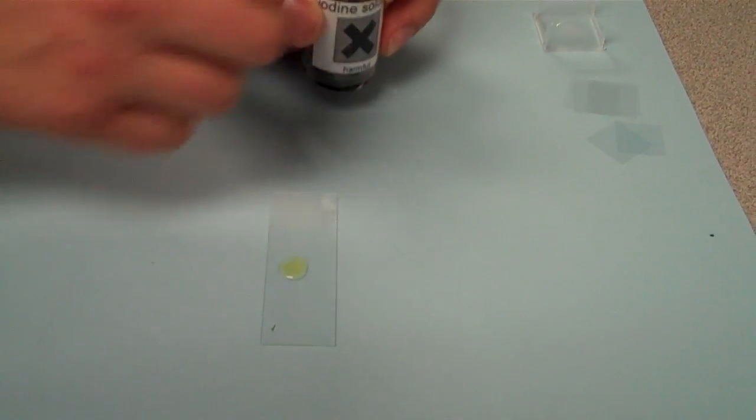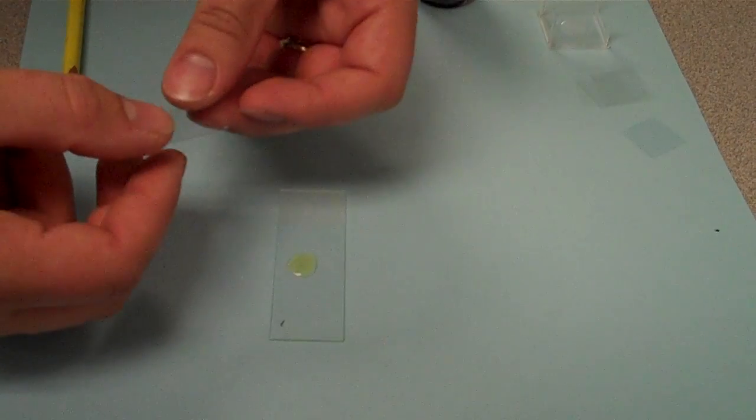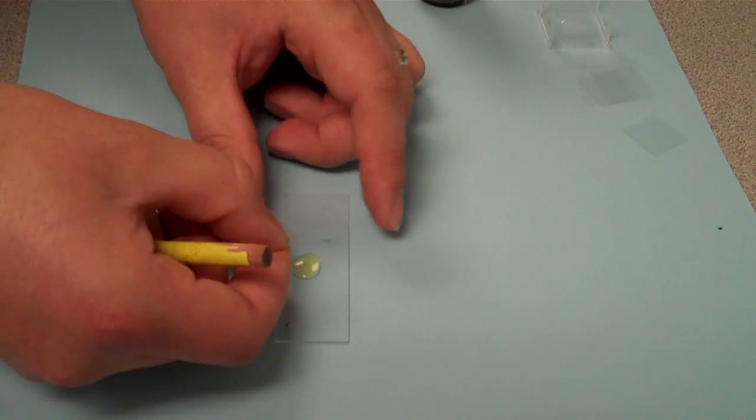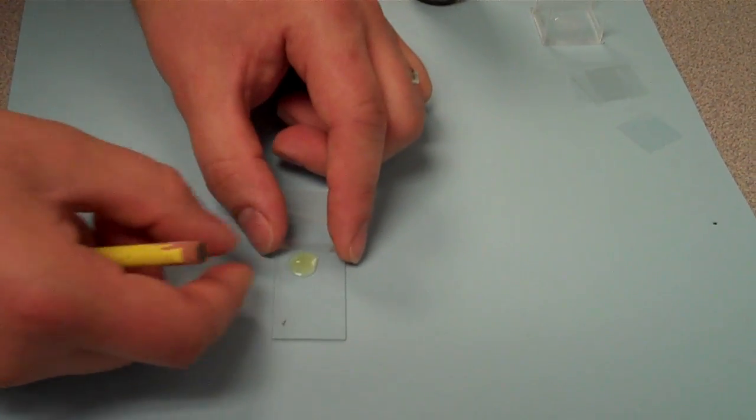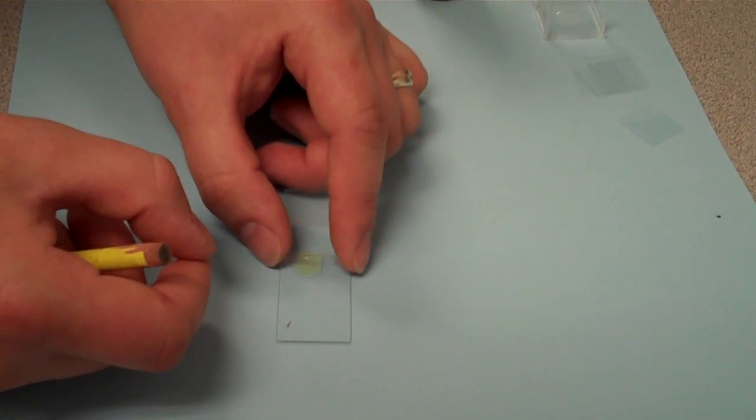Alright, that's probably a little bit much. Alright, then we take a cover slip. Again, if it's a new one, we don't have to clean it. If it's an old one, just wipe it down with alcohol. If you take it with one hand, and position it just so that the back end touches the water droplet.